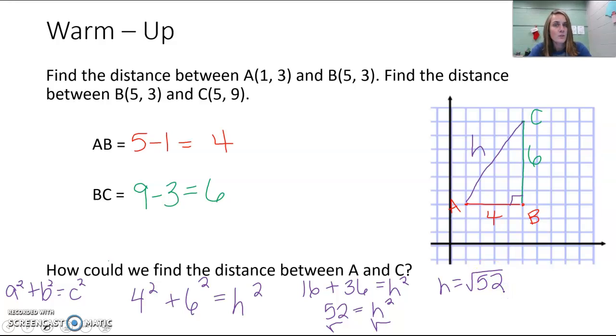52 is not a perfect square, but could we simplify the square root of 52? Let's see. Think about the factors of 52. 2 goes into it, but that's not a perfect square. 4 might, and 4 is a perfect square, so I'm going to divide 52 by 4, and it does. It's 13.